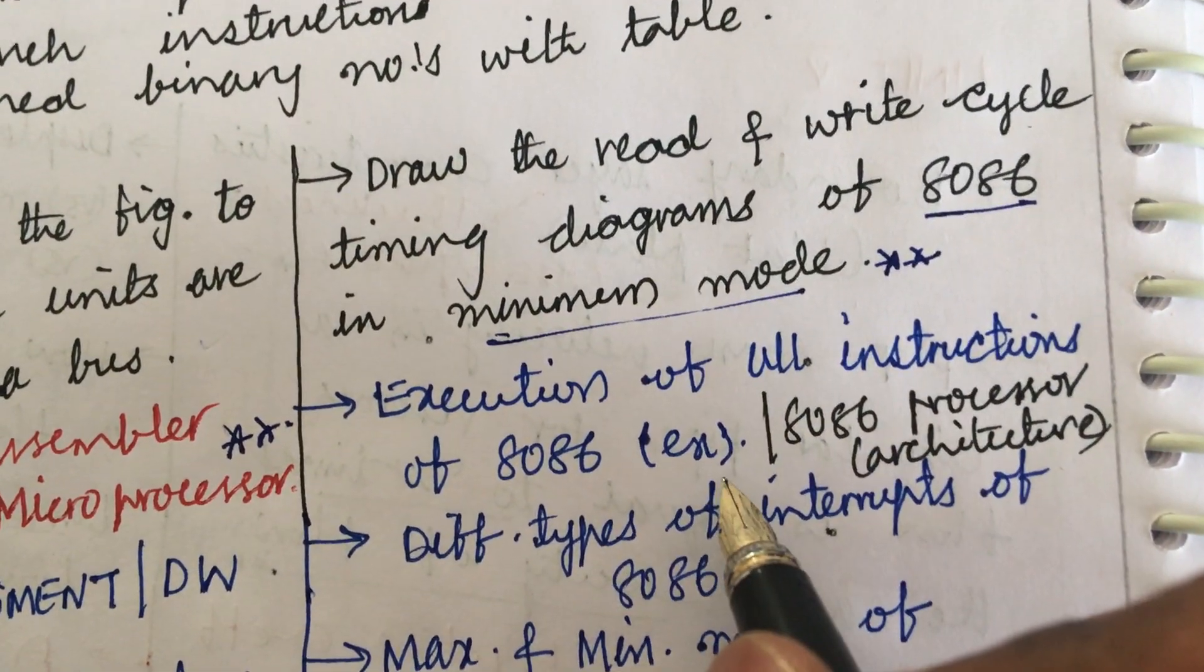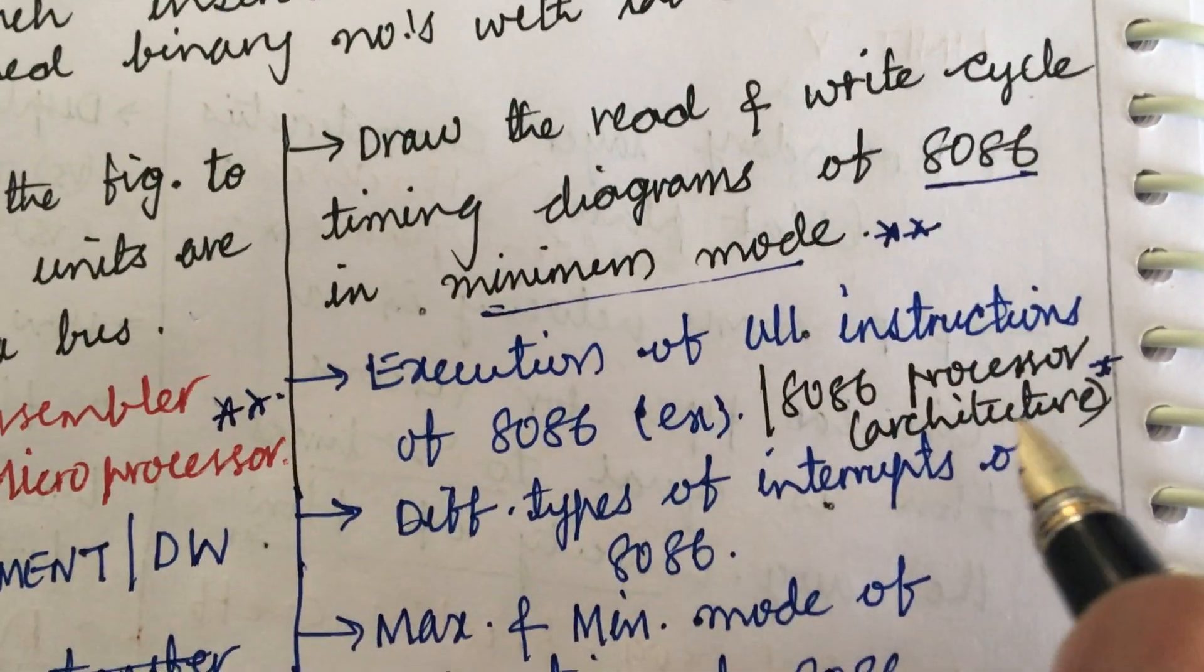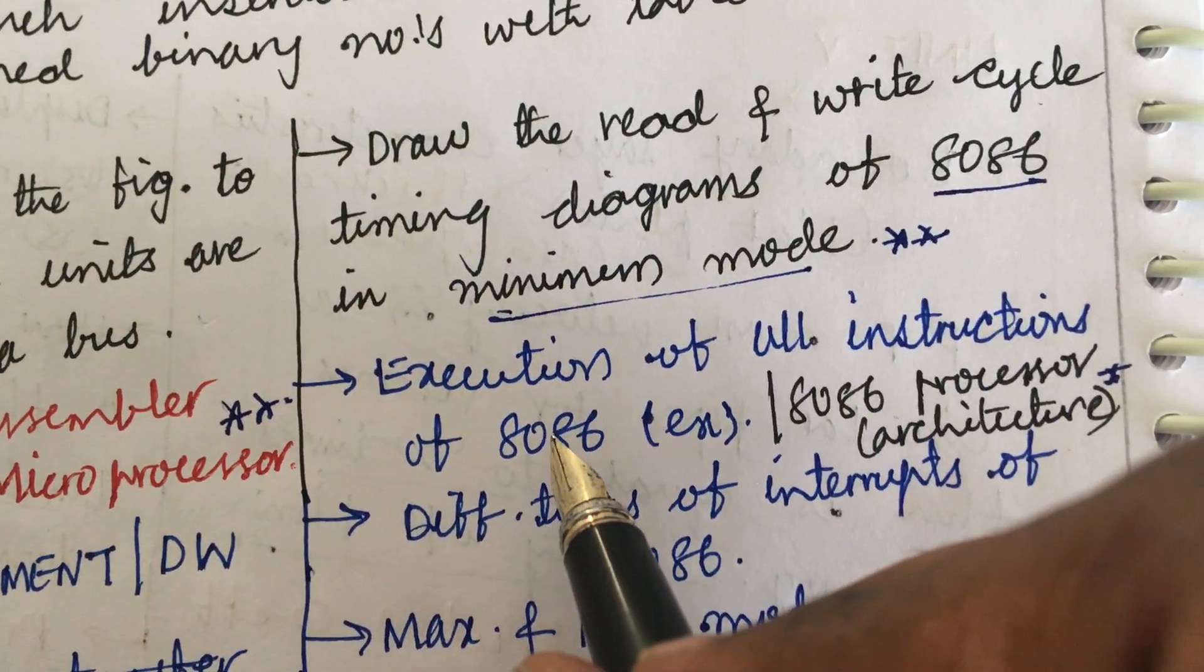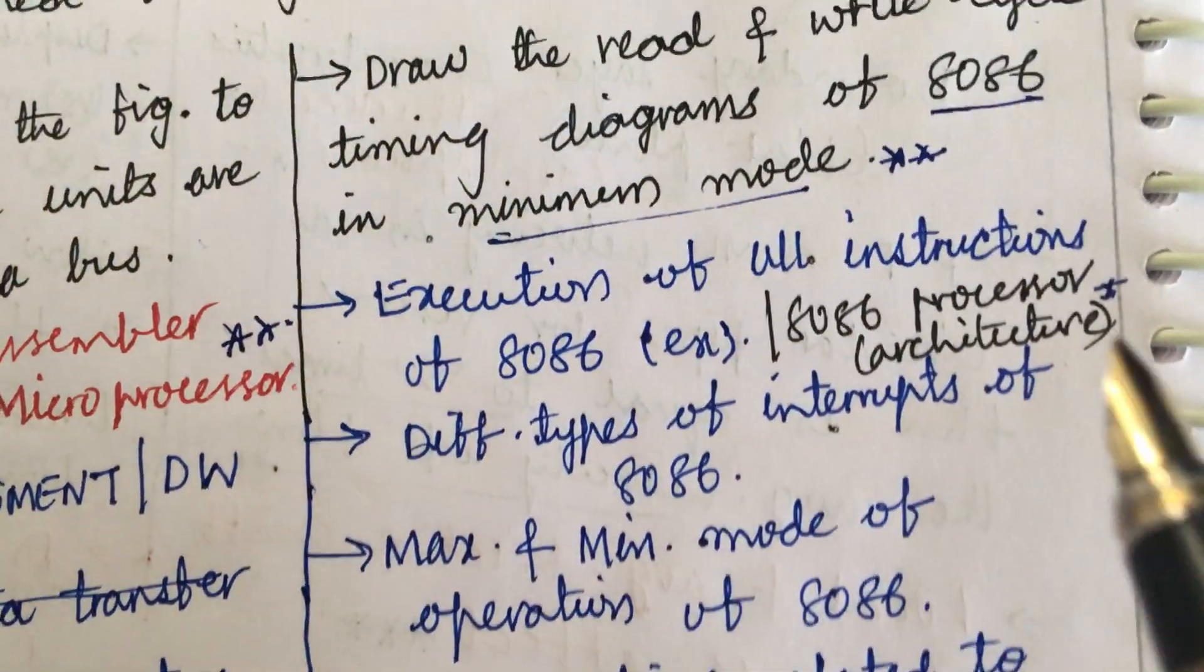Execution of all instructions of 8086 along with an example and 8086 processor architecture. You need to start working with the architecture diagram, then the execution of all the instructions and the different types of interrupts.